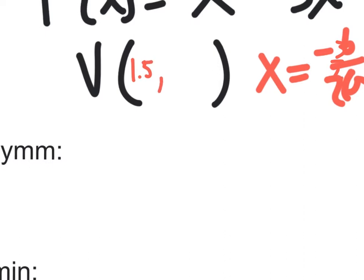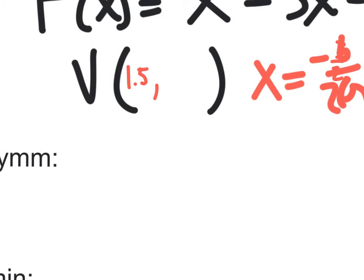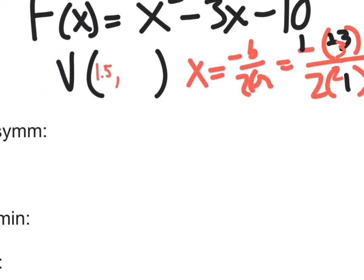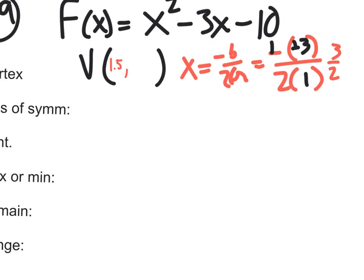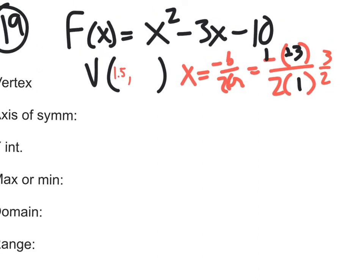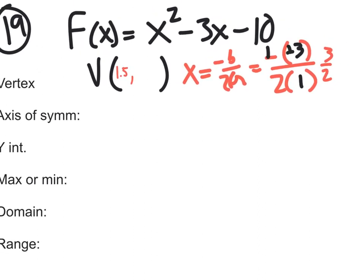Now let's find the y value of the vertex. Whoa, what happened here? So we have the x value of the vertex. How do I find the y value of the vertex? I plug in the x value, correct? Yeah.